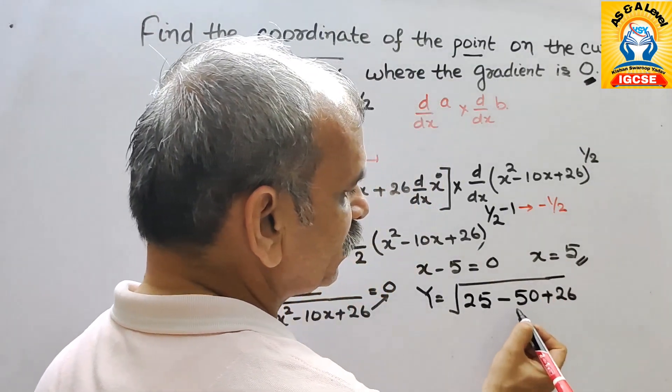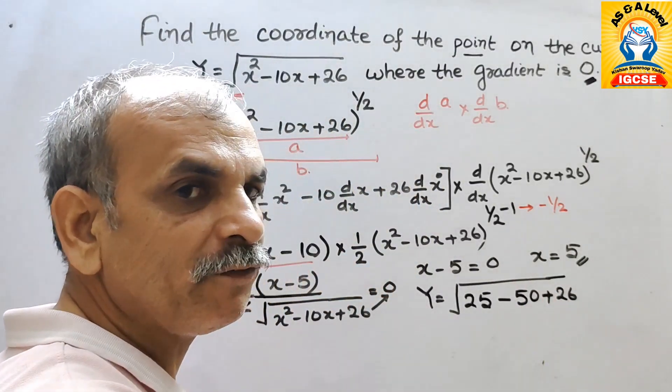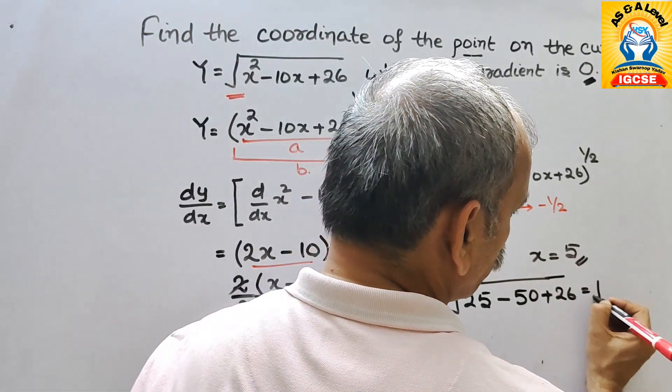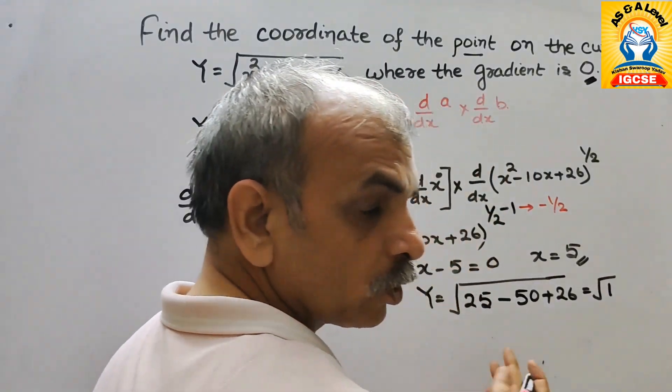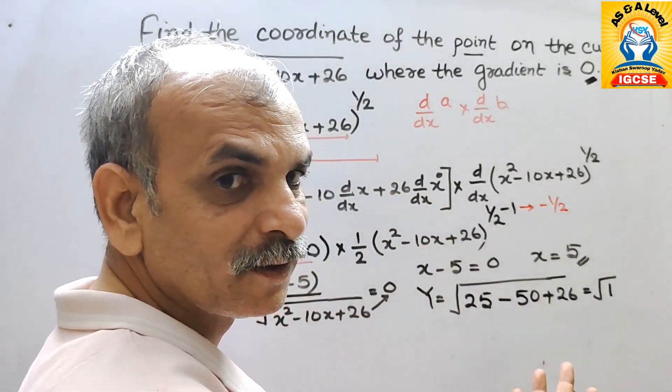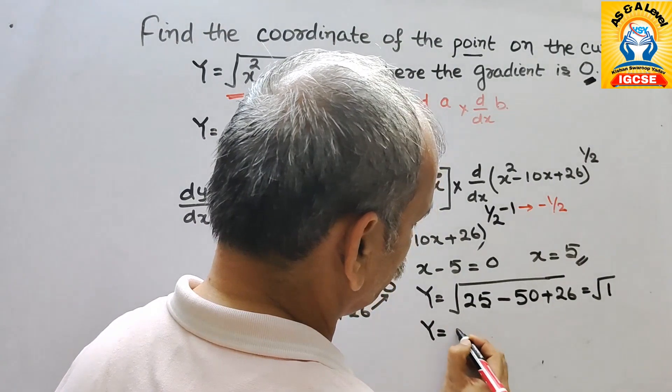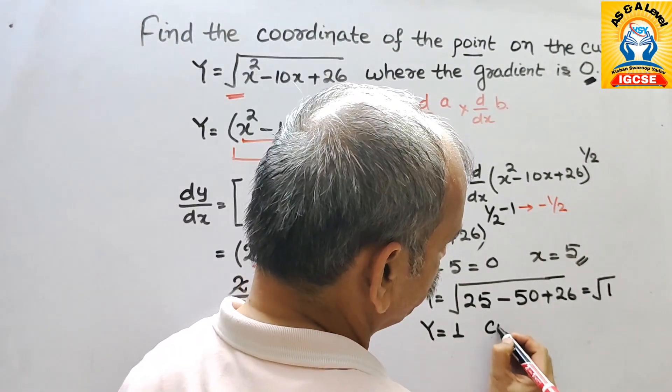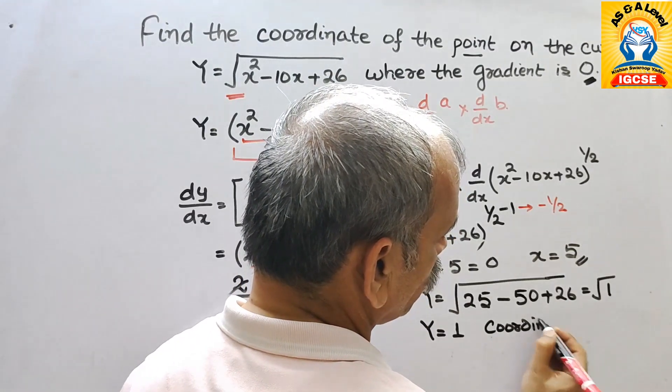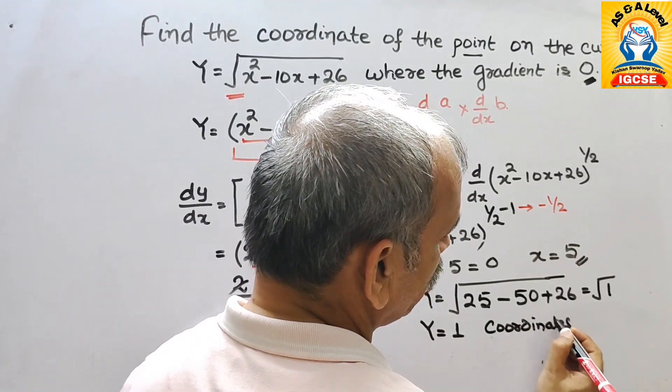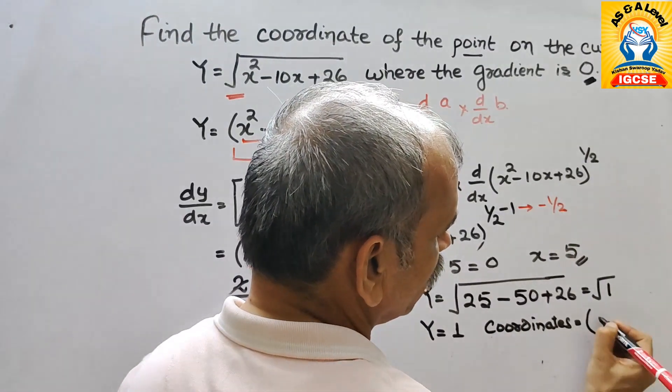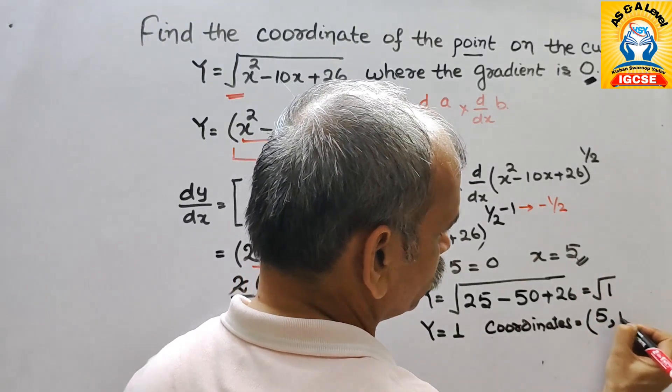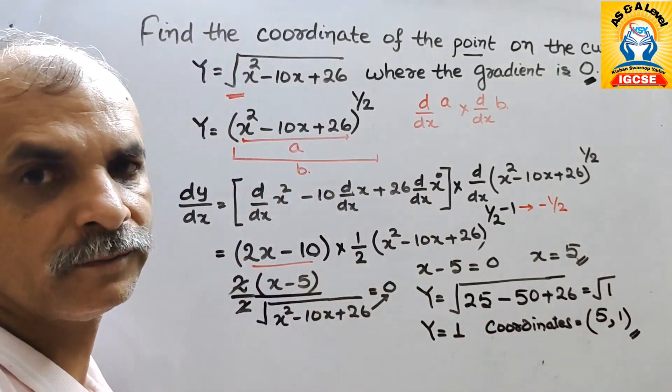So if you mean this, this is 25 plus 26 is 51. 51 minus 50 is 1. So here you will get root over 1. So now what is your y? y is equal to 1. So therefore the coordinates are 5 comma 1. So like this we have to do it.